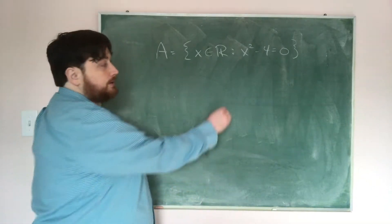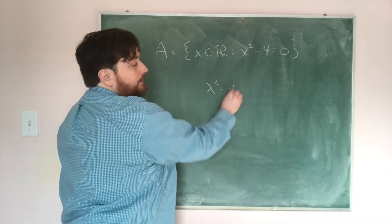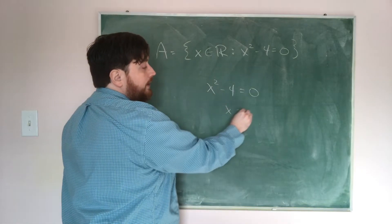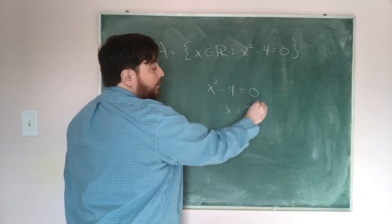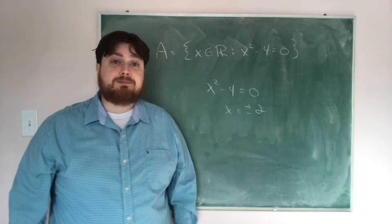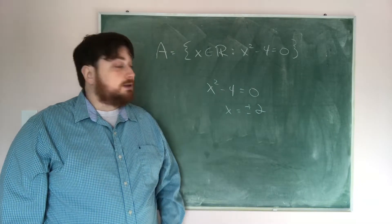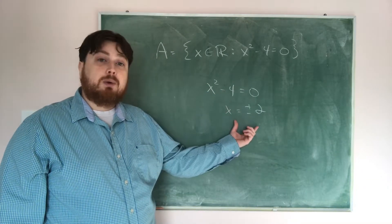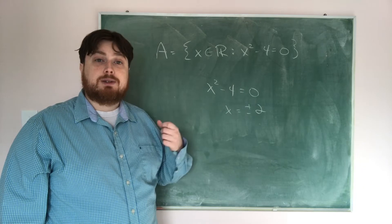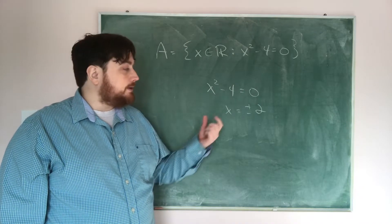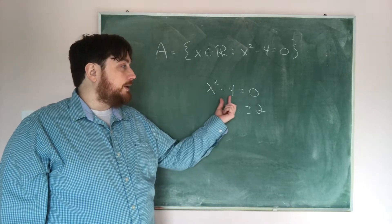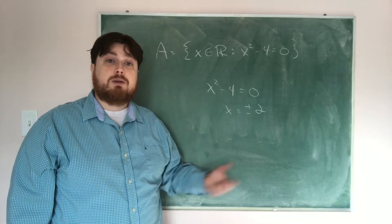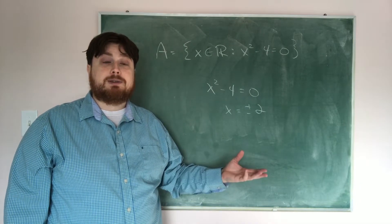To do that, we're going to solve x squared minus 4 equals 0, and if we do that, we get x equals plus or minus 2. Since both plus and minus 2 are real numbers, both of these elements are in the set. Furthermore, since nothing else squared equals 4, these are the only two elements of the set.